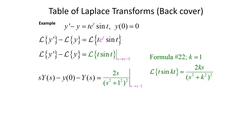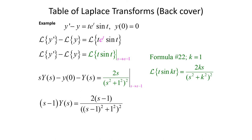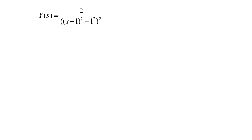Our initial condition y(0) equals zero means the y(0) term cancels out. We can factor Y(s) out of the other two terms, giving us (s minus one) times Y(s) equals two times (s minus one) divided by ((s minus one) squared plus one) squared. Dividing both sides by (s minus one) gives us Y(s) equals two divided by ((s minus one) squared plus one) squared.